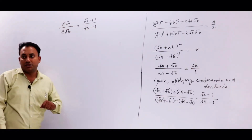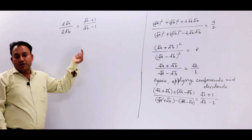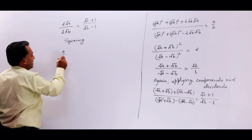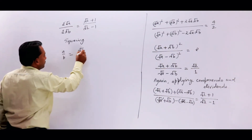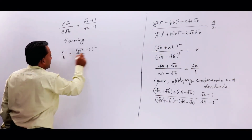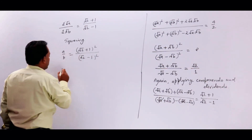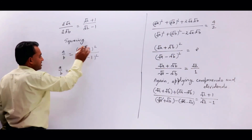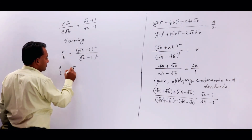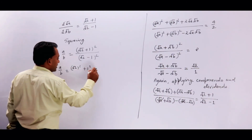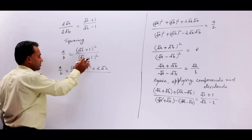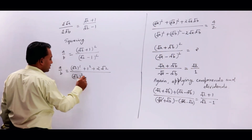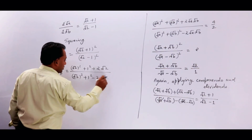हमें A और B का ratio चाहिए। Square root आ रहा है, तो square कर लीजिए — squaring on both sides, तो जाएगा A upon B = (√2 + 1)² upon (√2 − 1)²। A + B का all square लगाई, तो जाएगा: ऊपर (√2)² + 1² + 2√2 = 2 + 1 + 2√2, और नीचे (√2)² + 1² − 2√2 = 2 + 1 − 2√2।